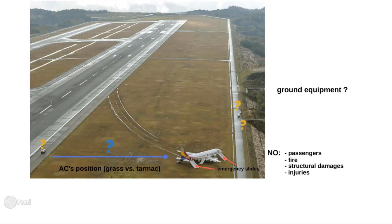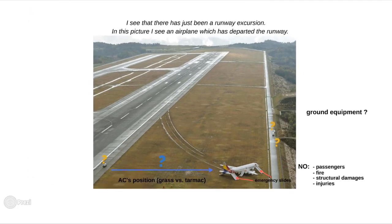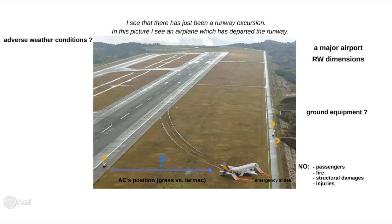Now you might want to say a few words about what surrounds the incident site. It's obviously an aerial view of an airport, and judging by the dimensions of the airstrip, it's a major airport. Take a look at the weather, but do that from the perspective of an aviation professional. Are there any adverse weather conditions that might have contributed to the incident? Is everything okay with the visibility? In our case, it seems yes. However, there are no references that could give us information about the wind.